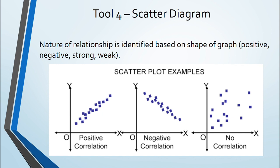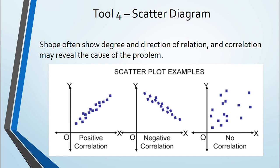If it is going up relationship is positive and when going down relationship is negative. So shape show degree and direction of relation. A correlation can be revealed based on a scatter diagram between variables under study.